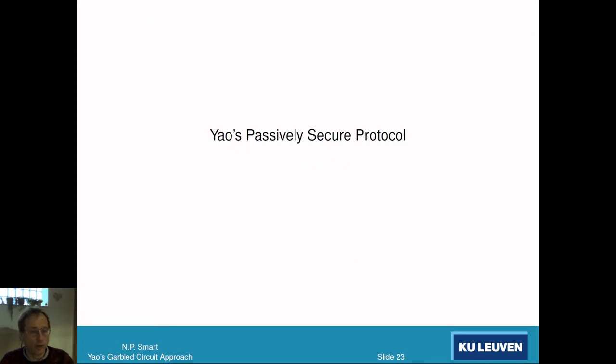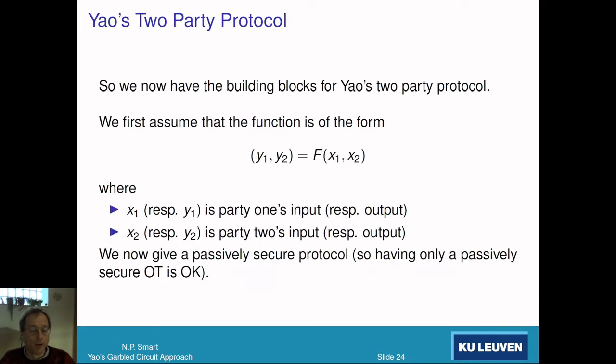We're going to concentrate on Yao's passively secure protocol. Recall we want to compute a function between two parties. We've got a function F, an input X1 known by party 1, an input X2 known by party 2. Party 1 wants to get an output Y1, party 2 wants to get an output Y2, and Y1 could be different from Y2.